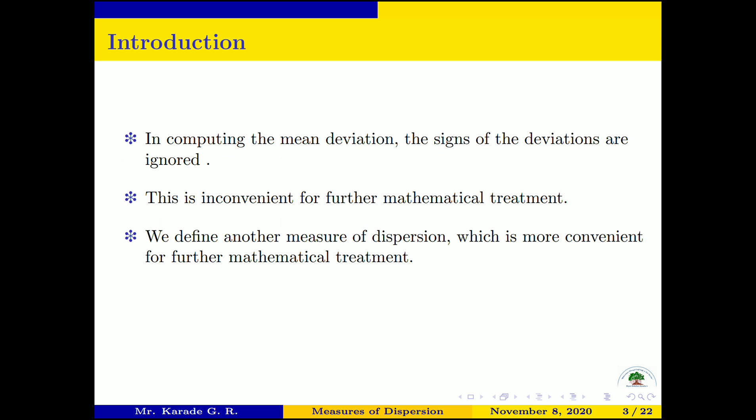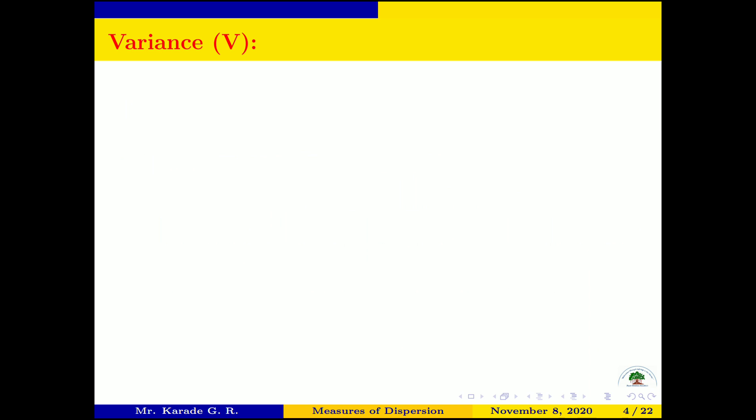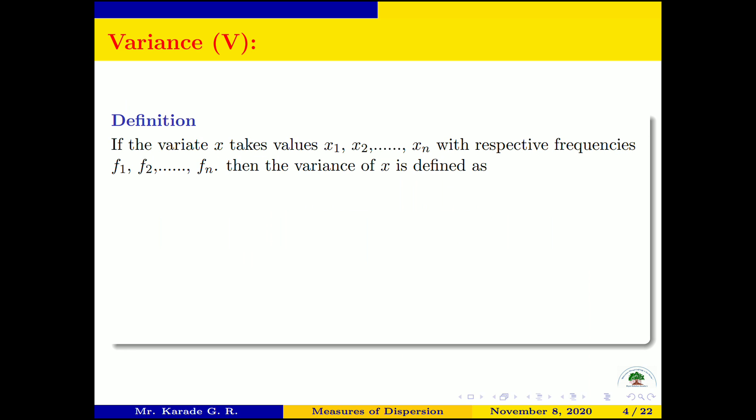Therefore we define another measure of dispersion which is more convenient for further mathematical treatment. This measure is also based on all the values of the data. The new measure of dispersion we are going to study is called variance, and its main work is to measure the dispersion of the given data.